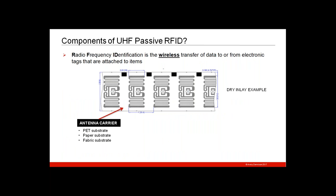What are the components of a passive tag? This is an example of a dry inlay. If you're a label converter, you'll take an RFID inlay and make it into a label. The RFID inlay sits on a carrier — most commonly a PET substrate, though paper or fabric substrates are also used. Fabric is useful for sew-in care labels in apparel. PET is the most common.